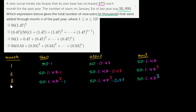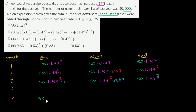So what's the pattern here? In each month, we're going to be starting with 50 times 1.47 to a power one less than the month. In the third month, the power is 2; in the second month, the power is 1; in the first month, you could view it as times 1.47 to the 0 power. So for the nth month, we start with 50 times 1.47 to the (n − 1)th power.